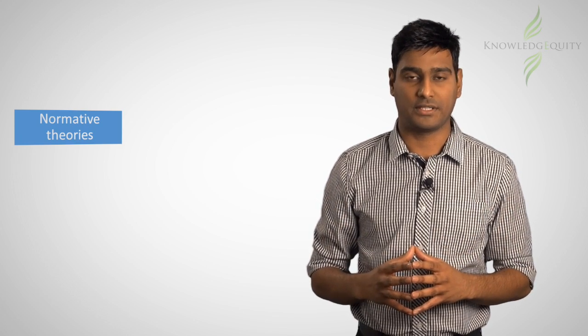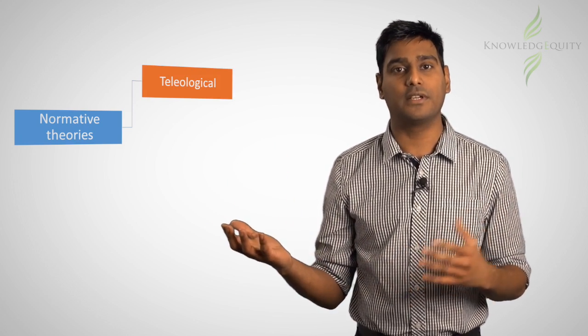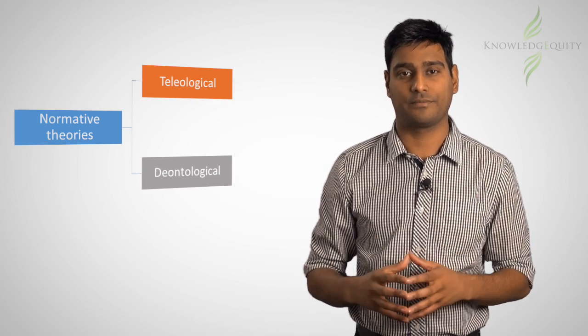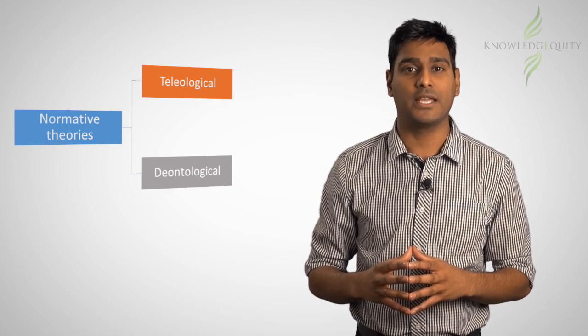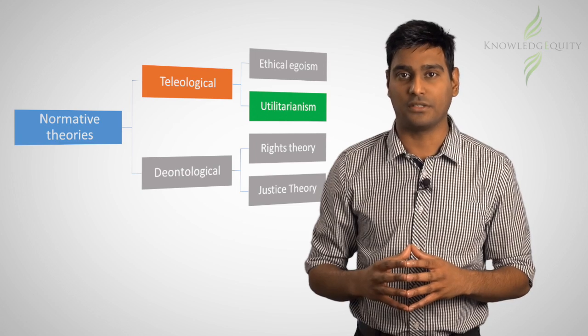So we know exactly where utilitarianism fits in. There are two broad categories of normative theories, namely teleological and deontological theories. Utilitarianism is a subset of teleological theory.